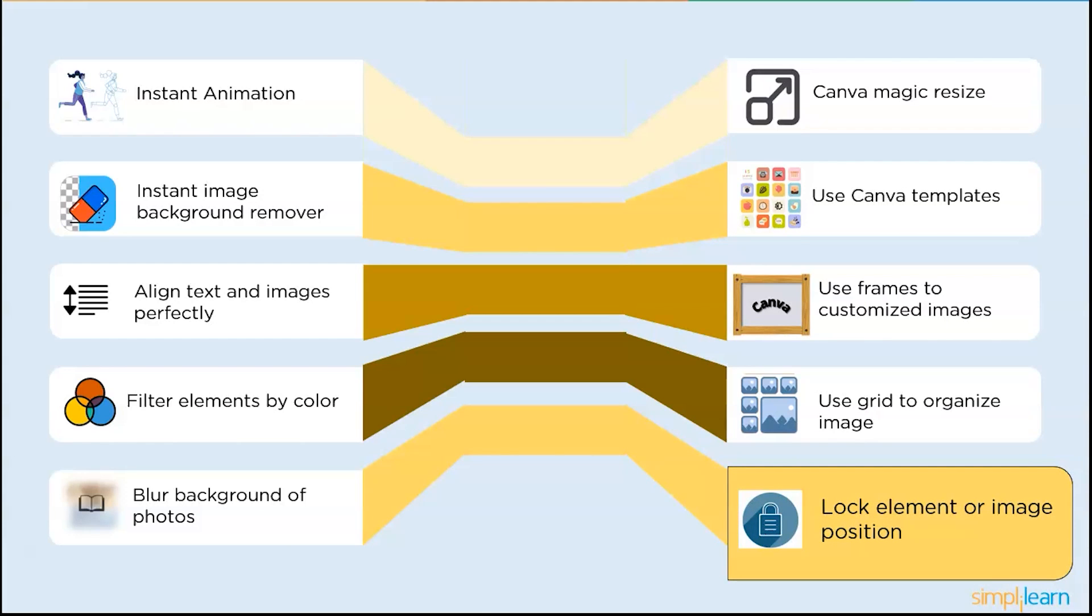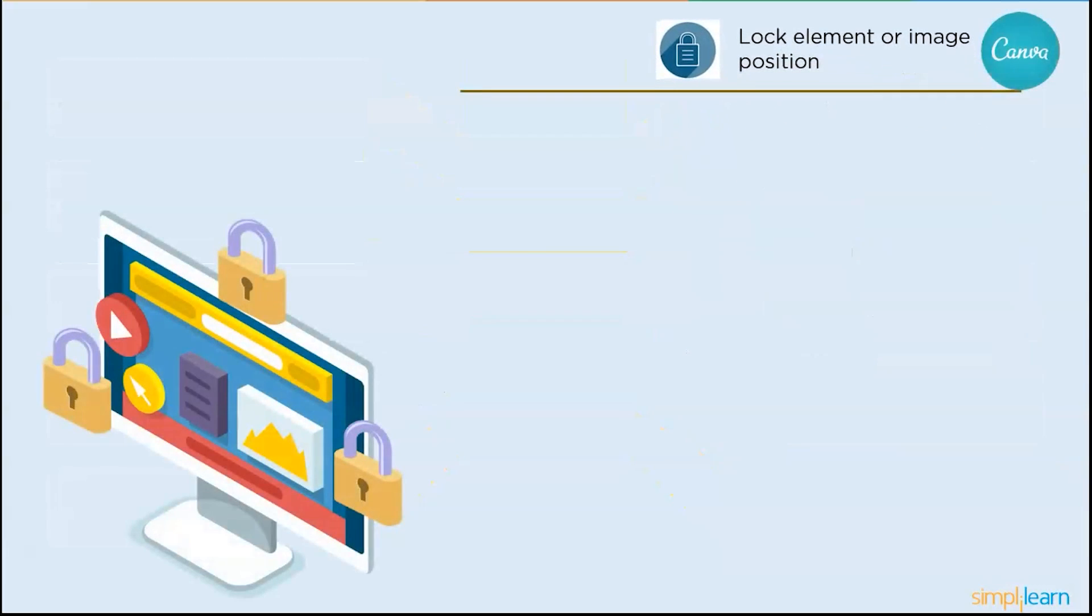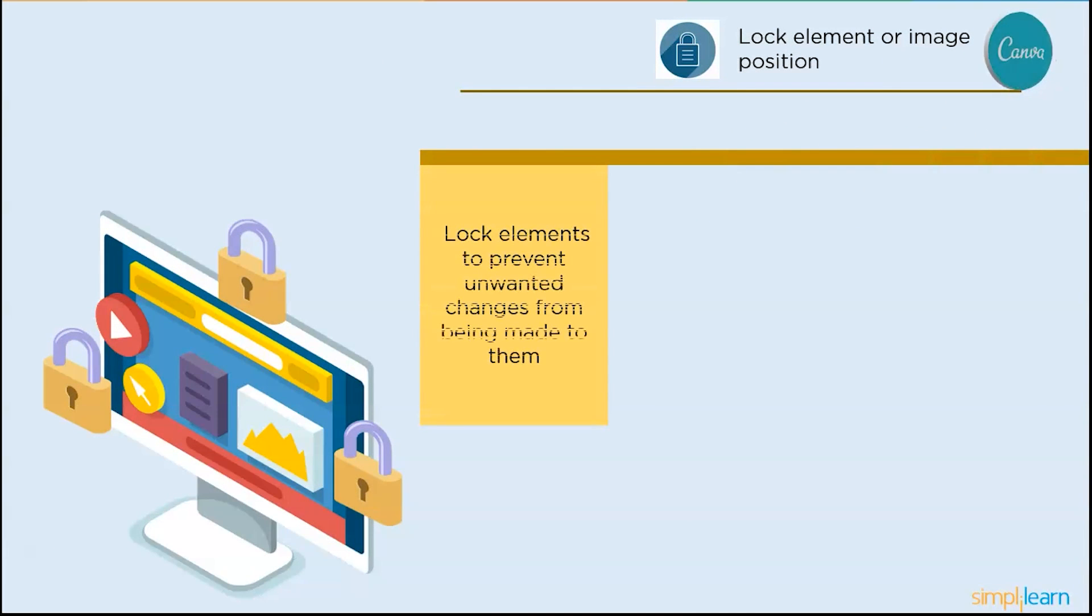So the next one is lock elements or image position. While editing other components of your design, lock elements to prevent unwanted changes from being made to them. Click the element or page thumbnail you wish to lock. To select several components, you may also click on them while holding the shift key on your keyboard. You may use the open lock symbol on the editor toolbar to partially lock a page or elements and only enable content replacement.